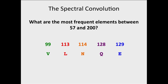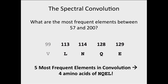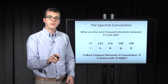The five most frequent elements that are highlighted are 99, 113, 114, 128, and 129. When we convert those from the integer mass table, we see that they correspond to V, L, N, Q, and E. So if we take the five most frequent elements, four of them give us the amino acids of NQEL. This is really promising on this small example.